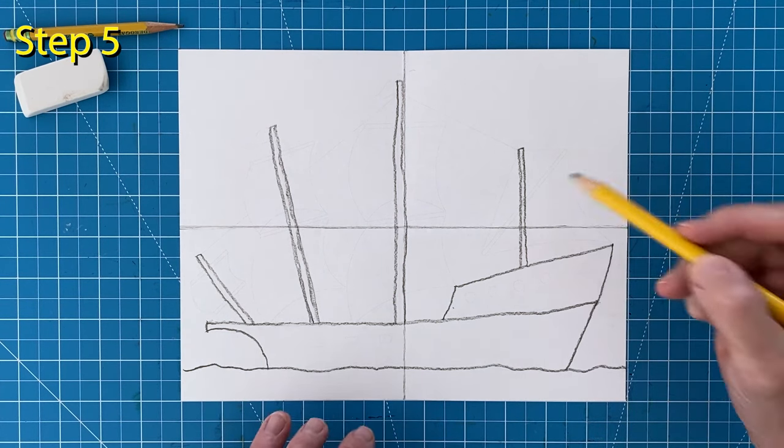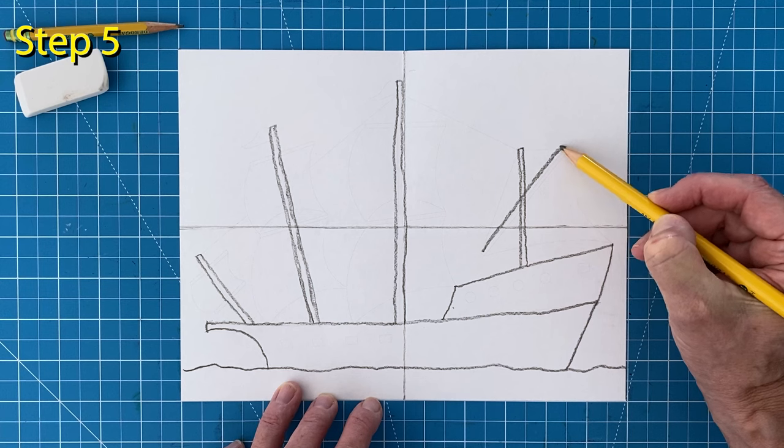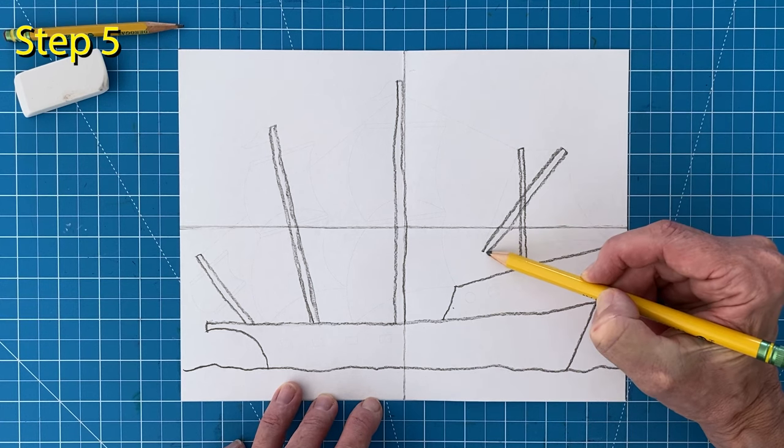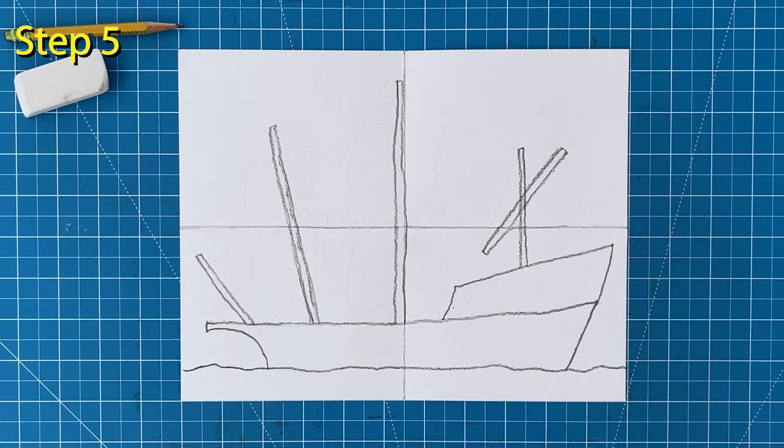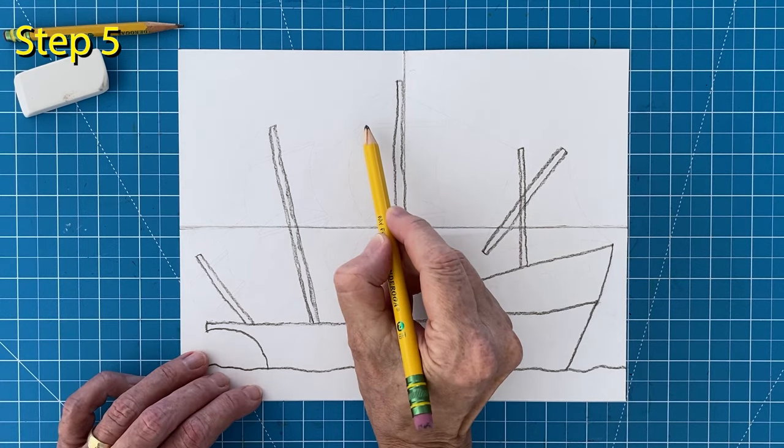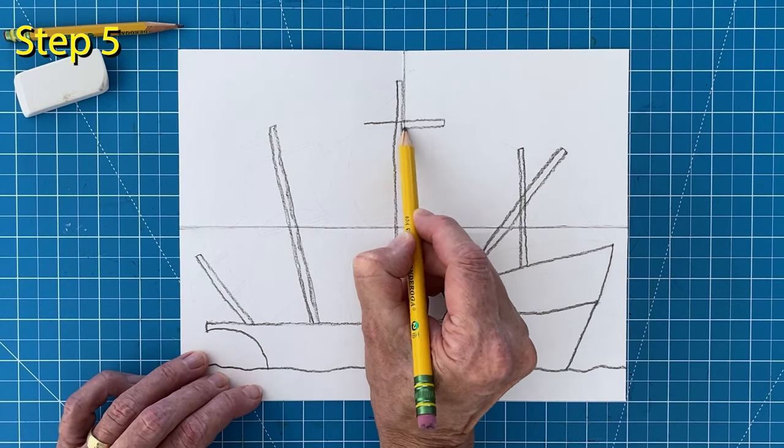Step number five. Start the yard poles by drawing the one on the right. That kind of makes an X shape. Add two yard poles to the center spacing them apart like you see here.